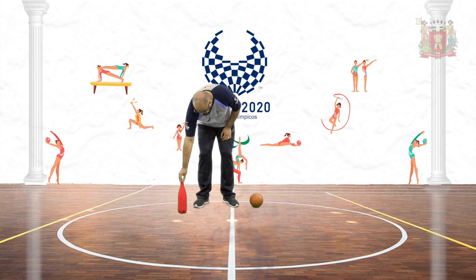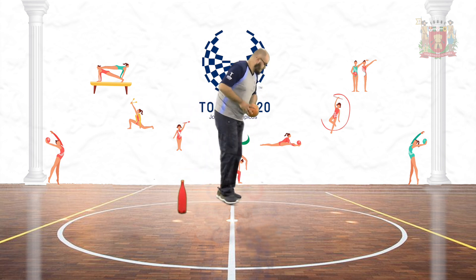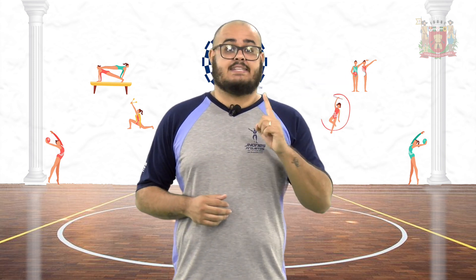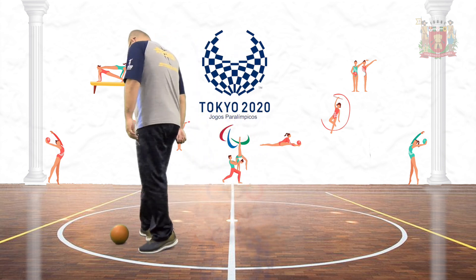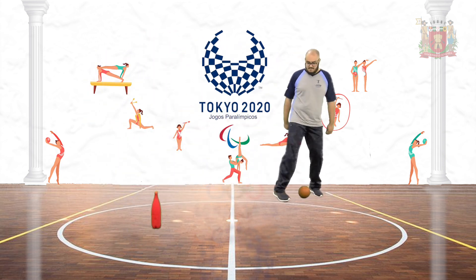Primeiro, vamos posicionar uma garrafa PET no chão e do outro lado nos posicionaremos com a bola. Essa atividade tem que ser executada com o lado não dominante. Então, se você é destro, irá realizar a atividade com a perna esquerda. Se você é canhoto, executará a atividade com a perna direita. Eu sou destro, então vou demonstrar com a perna esquerda. Agora, vamos conduzir a bola até a garrafa, fazer a volta na garrafa e retornar para a posição inicial. Repita esse movimento até conseguir dominá-lo por completo.